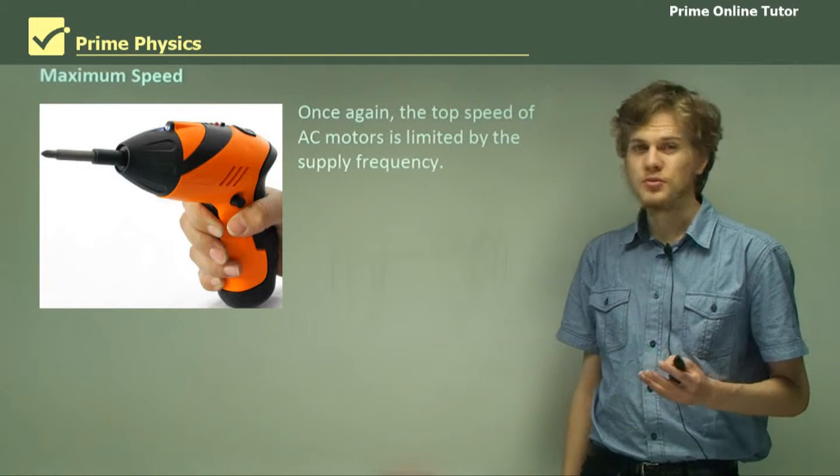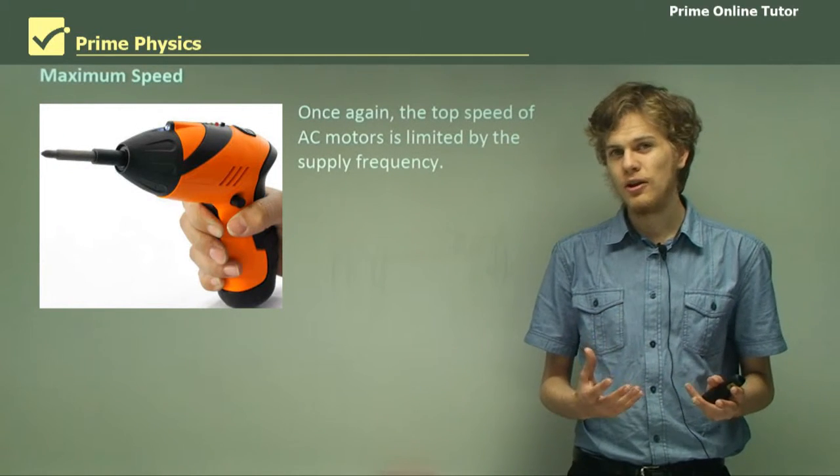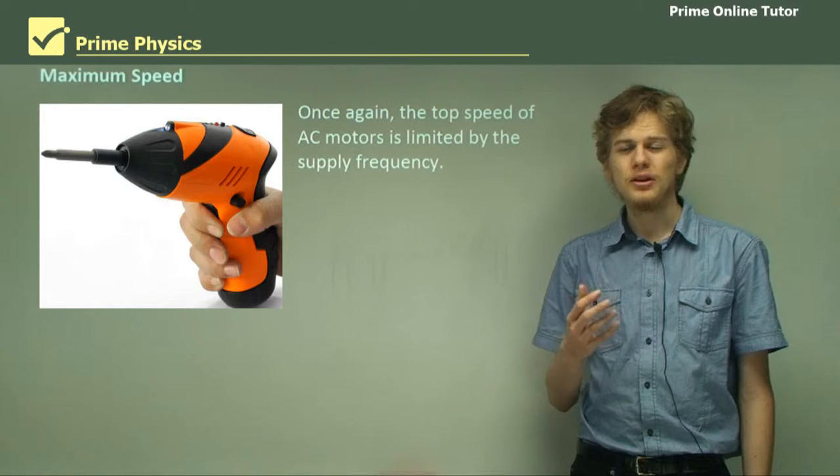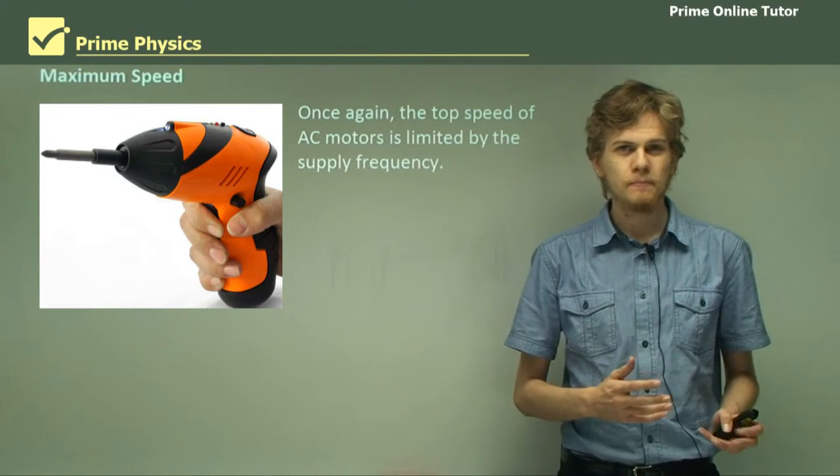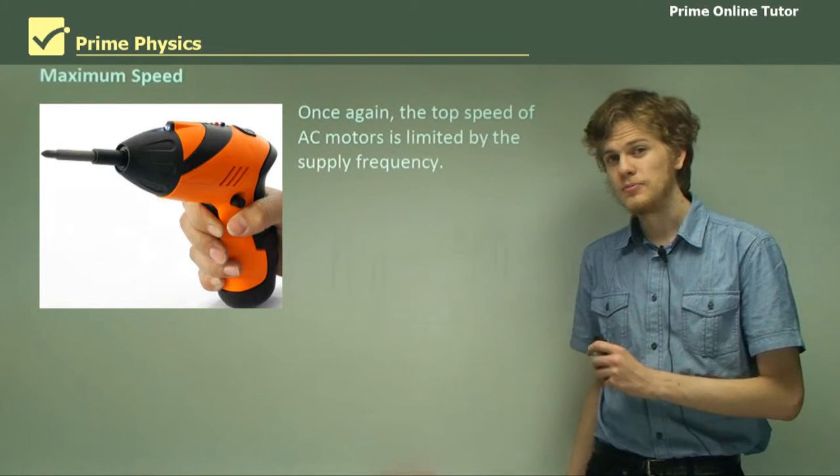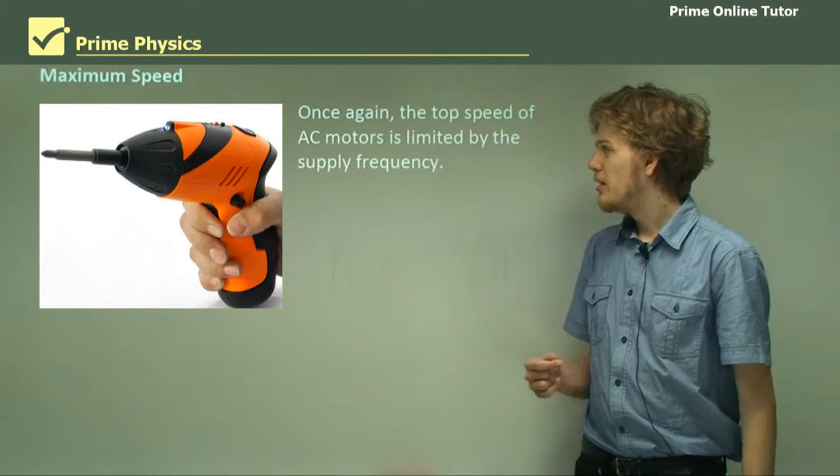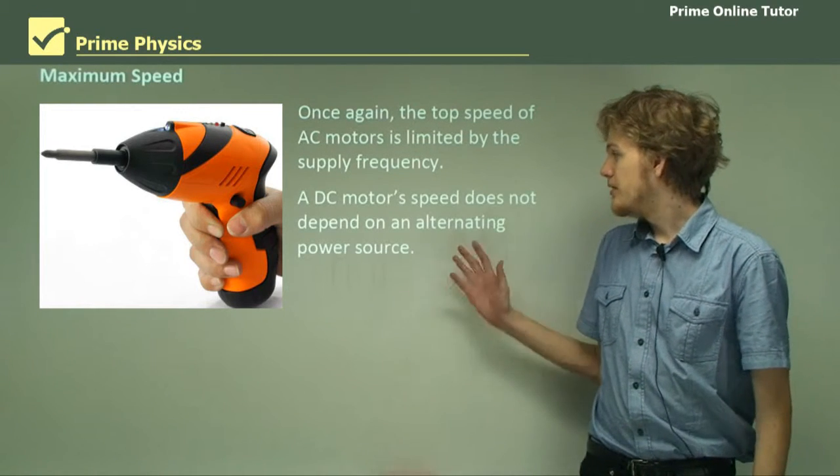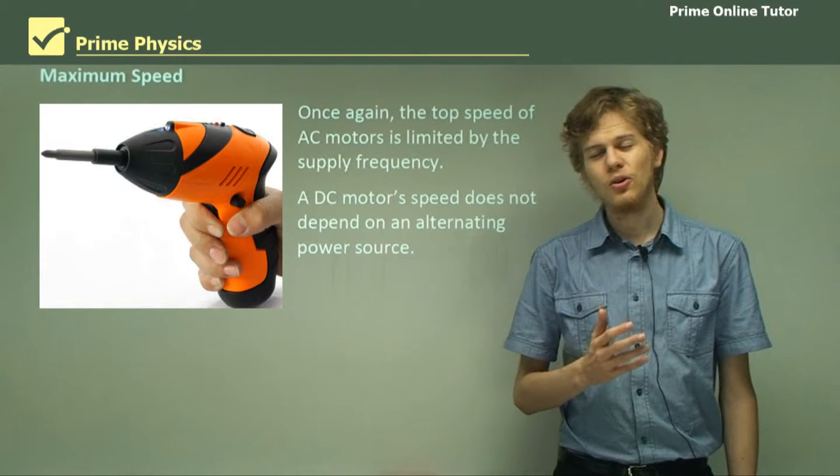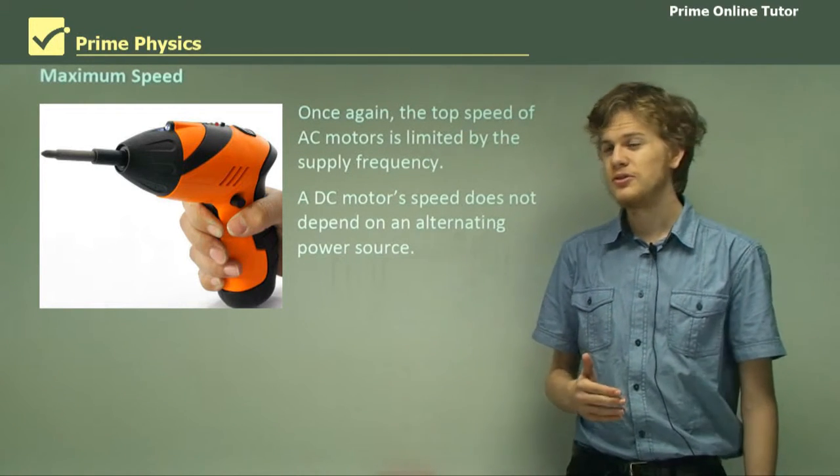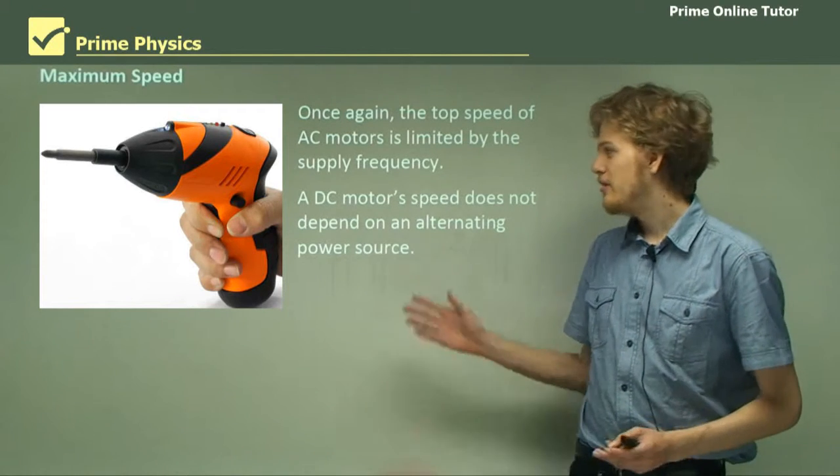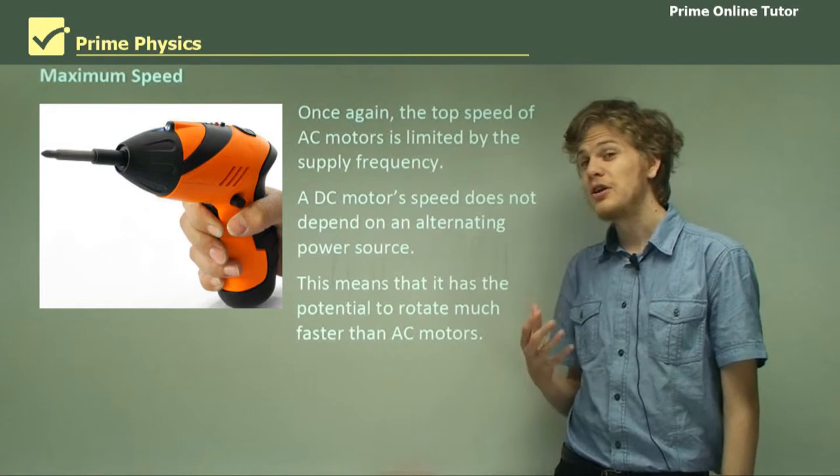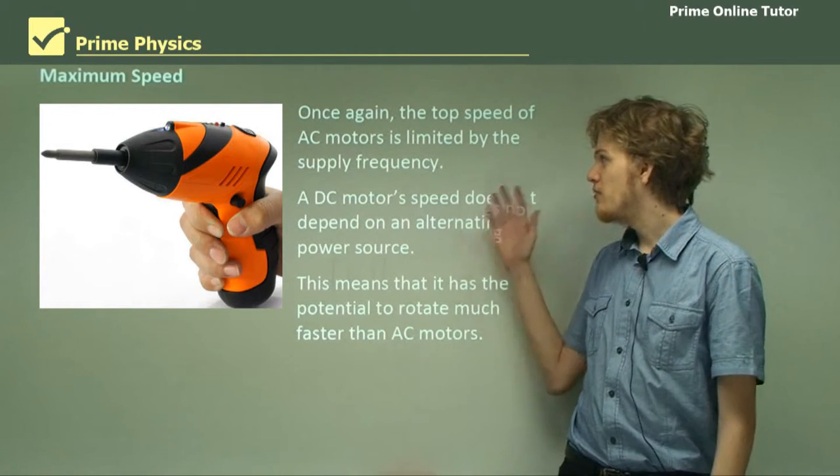What about having a maximum speed? What's the fastest we can get a motor to run? Well once again AC motors are limited because they always try to spin at the same rate as the input frequency. We can slow them down a bit of course by connecting them to a heavy load but we can't speed them up in the same way. A DC motor on the other hand does not depend on the input voltage frequency because the frequency doesn't exist. The input voltage is constant. So this means that it will have the potential to rotate much faster than any of these AC motors.